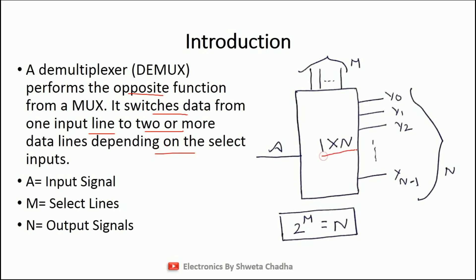It is denoted by 1×N. Why 1×N? Because the number of input signals are fixed, equal to 1, whereas we can have N number of output signals. The number of output signals depends on how many select lines we have. The formula is 2 raised to the power of M equals N, where M is the number of select lines, N is the number of output signals, and A is our input signal.